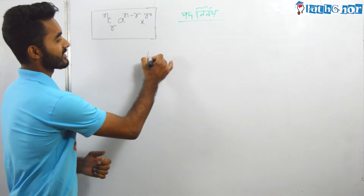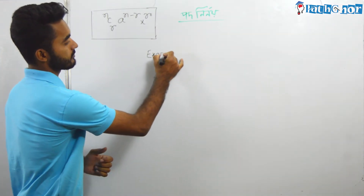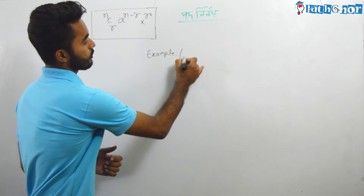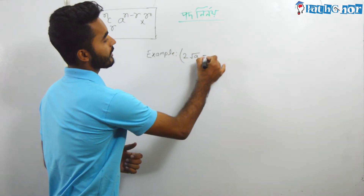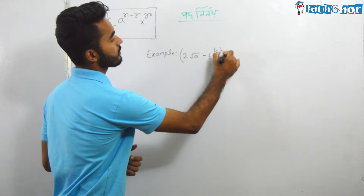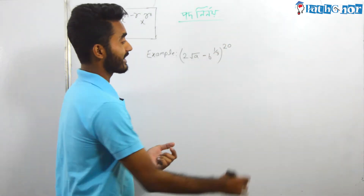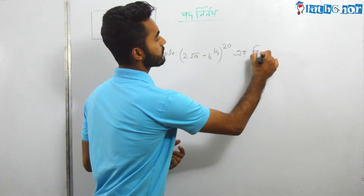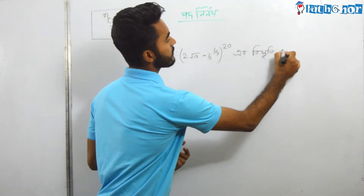The example is: 2 root a minus b to the power one-third, whole to the power 20.